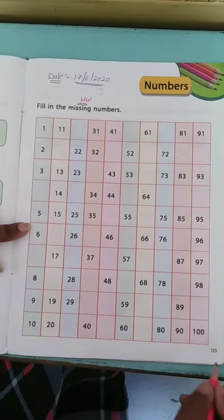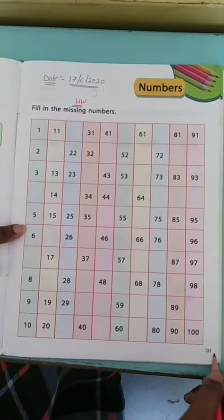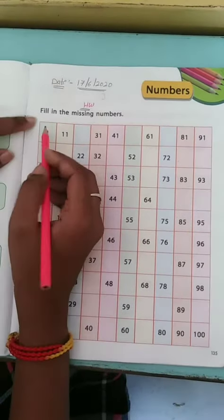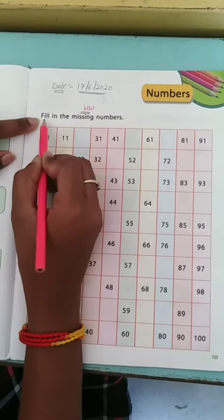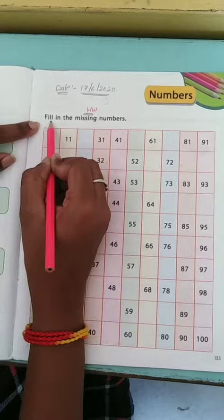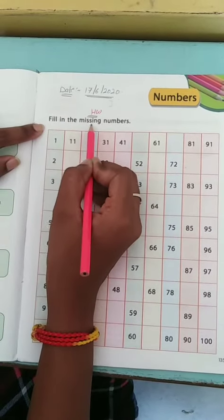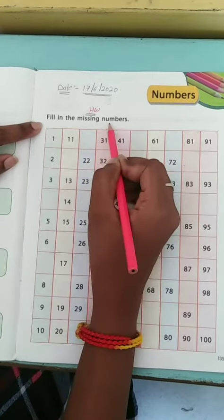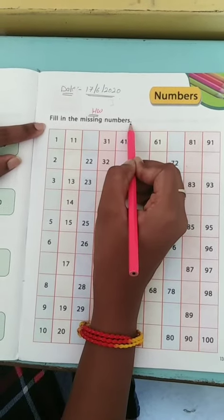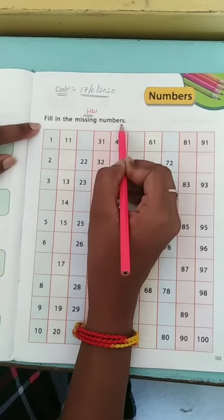In the 3A book, page number 135, look at the heading. F-I-L-L, fill. I-N, in. T-H-E, the. M-I-S-S-I-N-G, missing. N-U-M-B-E-R-S, numbers. Fill in the missing numbers.